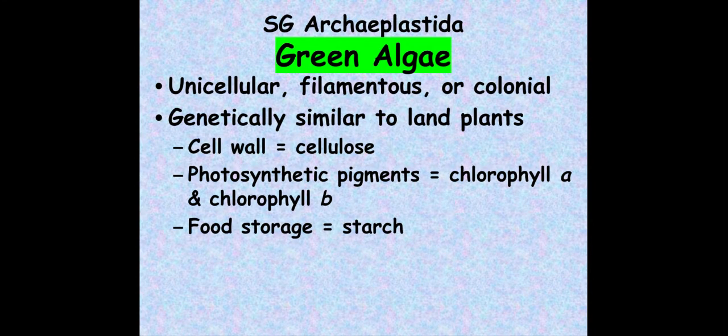For general characteristics of green algae: they are unicellular, filamentous, or colonial — they take on many different forms. Genetically, they are pretty similar to land plants and share a lot of the same genes. We think that carophyte green algae is the precursor to land plants. They have cell walls made of cellulose, photosynthetic pigments of chlorophyll A and B, and they store their food as starch — just like land plants.